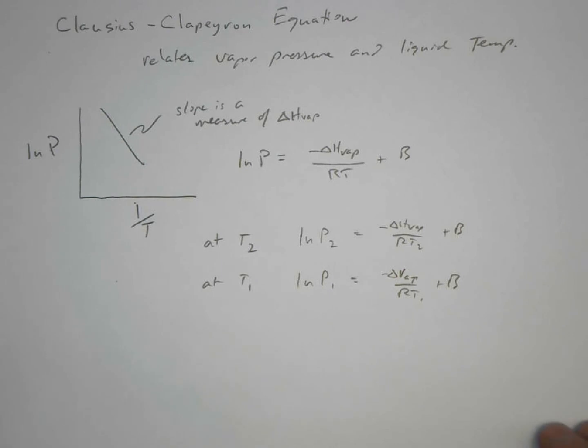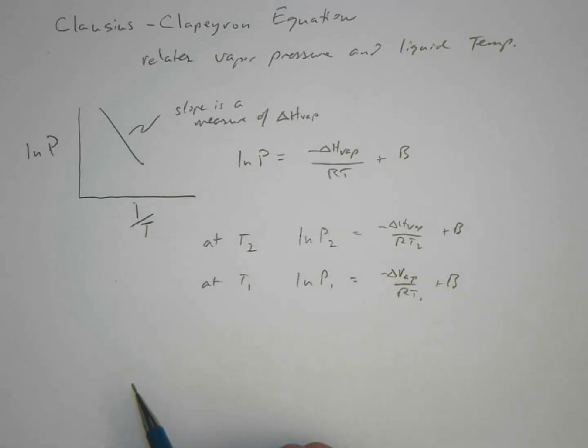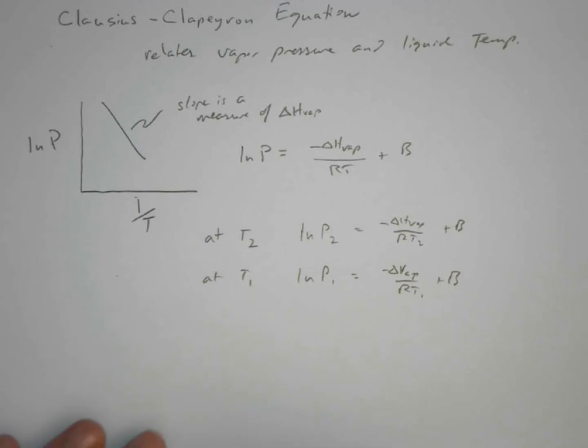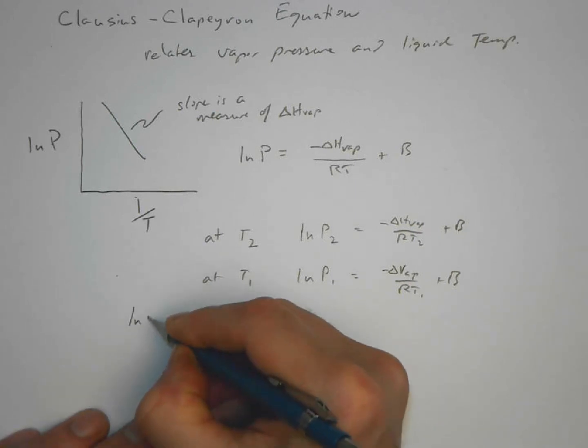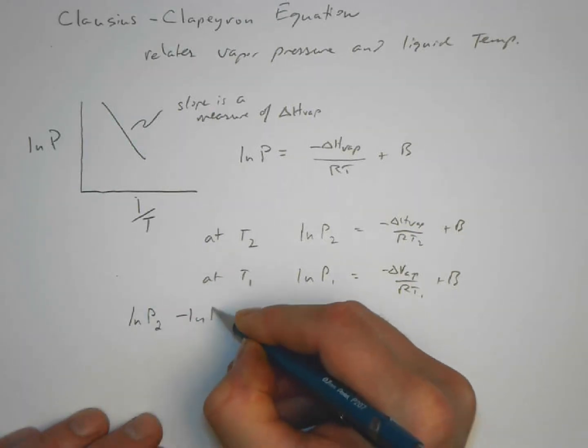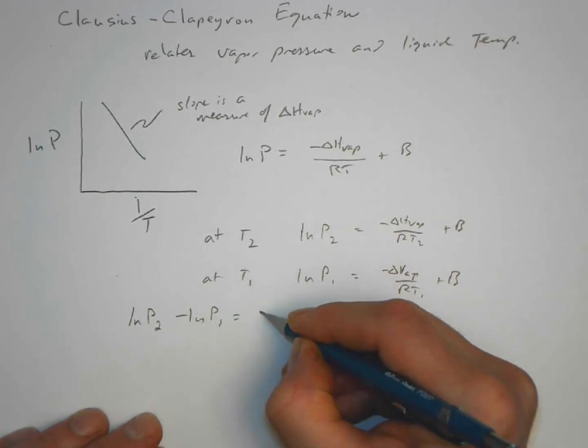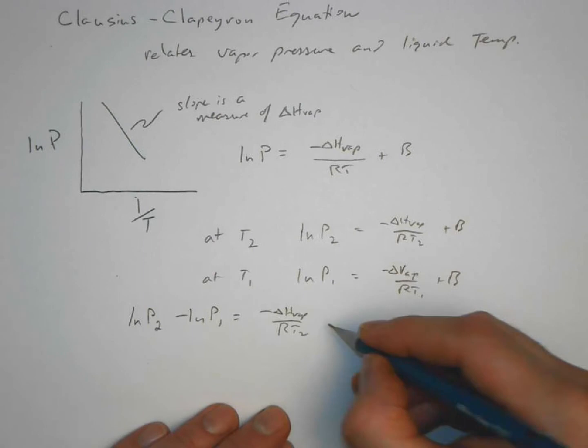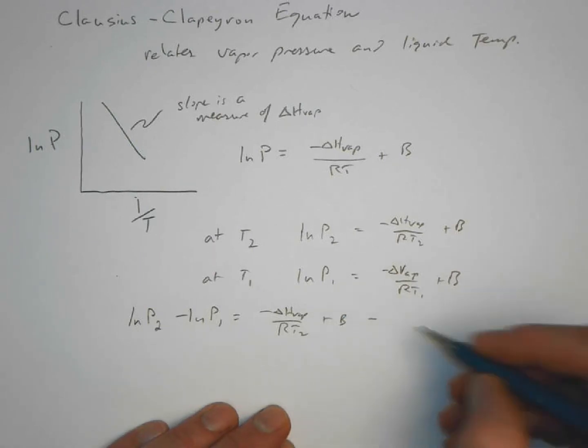Our goal here is to be able to find the vapor pressure at a given temperature. If we know the vapor pressure at one temperature, we can find the vapor pressure at a different temperature. So to do that is the following. Again, I don't care if you know how to derive this, but I want to show you where it comes from. We are going to subtract these off.